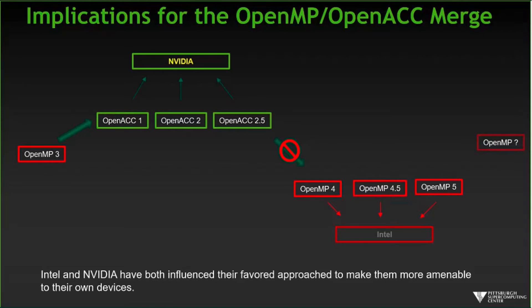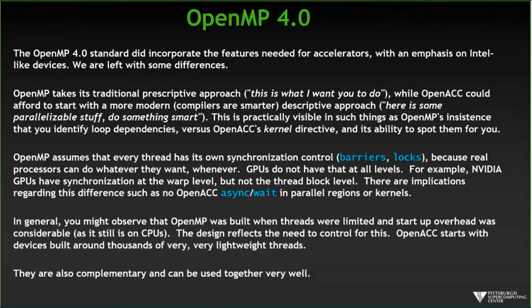OpenMP 4 is almost entirely concerned not with improvements to the multi-core OpenMP 3 stuff we've been looking at, but with using accelerators and moving data back and forth — memory management. Memory management is totally meaningless in a multi-core shared-memory world; it's only important for accelerators, for things you plug in. So the OpenMP 4 standard has all these features to deal with data migration.